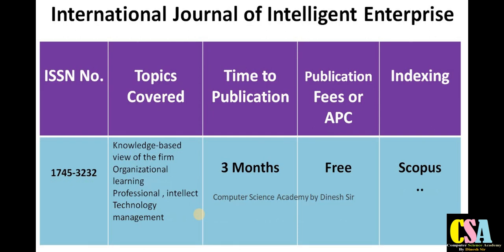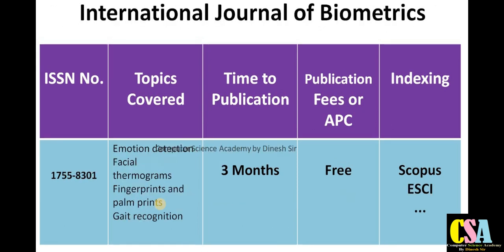Next is the International Journal of Intelligent Enterprise, ISSN 1745-3232. This is a Scopus-indexed quick publication journal. You will receive notification about acceptance, rejection, or minor changes within one month. There are no publication charges. Topics covered include knowledge-based systems, organizational learning, intellectual property, technology management, and IPR.